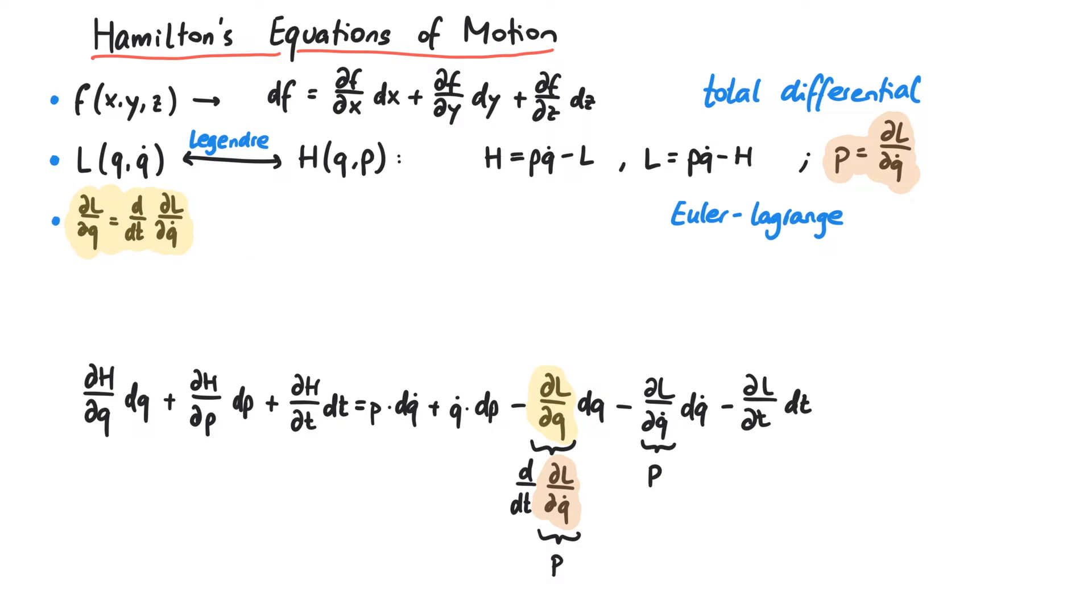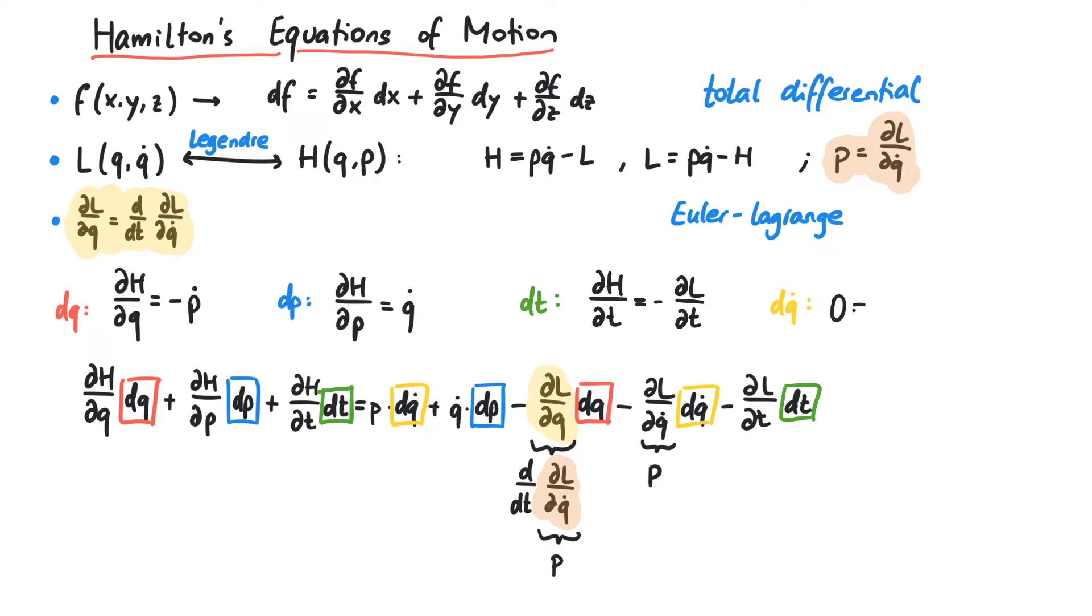Now we compare coefficients. The coefficients of dq are dH over dq on the left and minus p-dot on the right. For dp, we have dH over dp on the left and q-dot on the right. For dt, we have dH over dt on the left and minus dL over dt on the right. We also compare the coefficients in front of the q-dot, however, this is a trivially fulfilled equation.